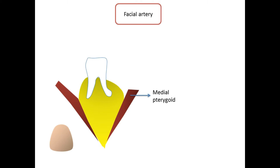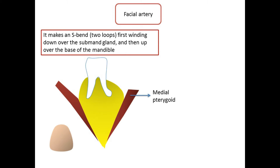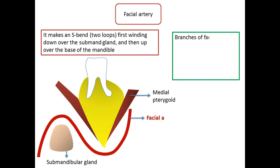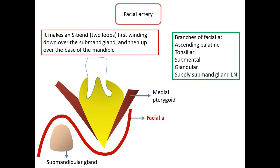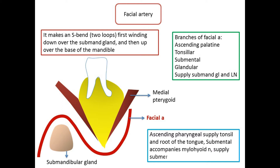The cervical part of the facial artery runs upwards on the superior constrictor of the pharynx, deep to the posterior belly of the digastric. It grooves the posterior border of the submandibular salivary gland, then makes an S-bend, winding down over the submandibular gland and then over the base of the mandible. The cervical part gives off ascending palatine, tonsillar, submental, and glandular branches for the submandibular salivary gland and lymph nodes. The ascending palatine artery supplies the tonsil and the root of the tongue; the submental branch accompanies the mylohyoid nerve and supplies the submental triangle and sublingual salivary gland.